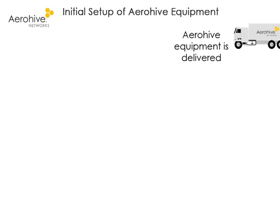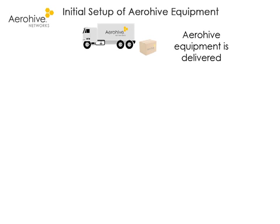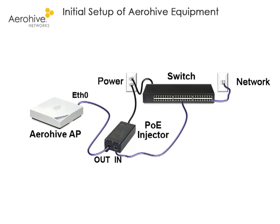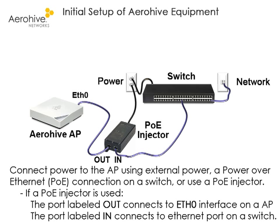Once the Arrowhive equipment has arrived, unpack the box and ensure all the components you ordered have been delivered. Hive APs can be powered using an external power brick, a power over Ethernet connection on a switch, or a PoE injector.